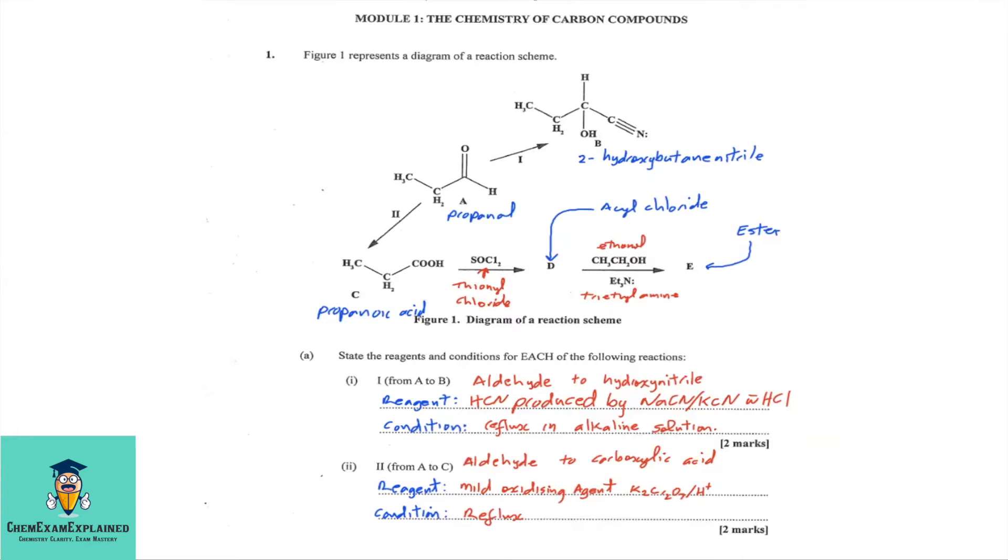Question 1. Figure 1 represents a diagram of a reaction scheme. If you look at A, you'll see that it is an aldehyde going to a hydroxynitrile. That's A to B. Going from A to C, you're going from an aldehyde to a carboxylic acid. So, looking at the diagram of the reaction scheme, we can now answer the questions.